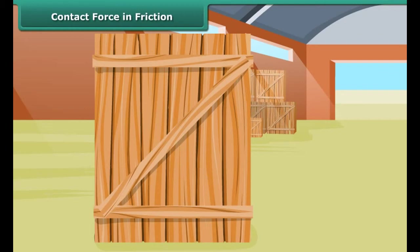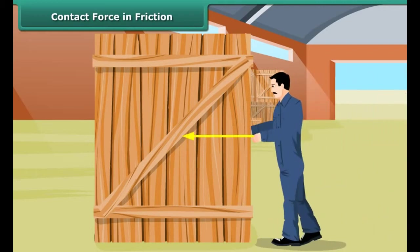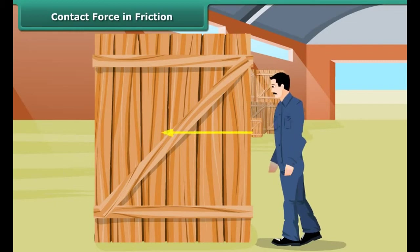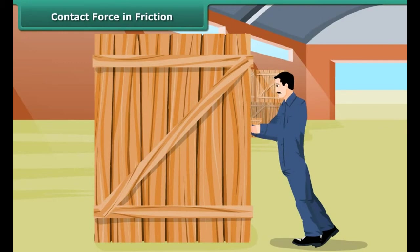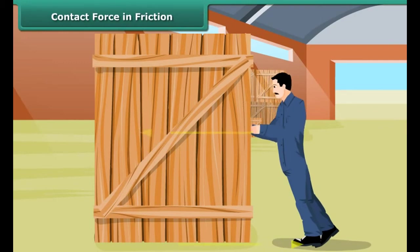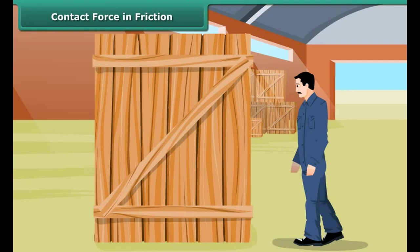A ball is rolled on a smooth surface and another similar ball on a rough surface. Both balls start rolling with the same speed, same force, and at the same time. The ball rolling on the smooth surface travels a larger distance than the one on the rough surface. This shows that rough surfaces offer more friction than smooth surfaces.